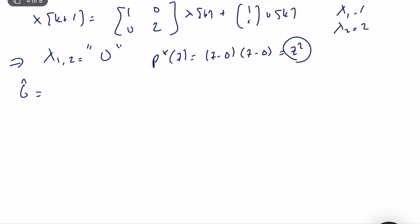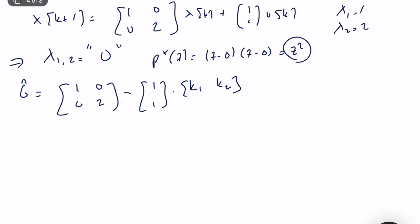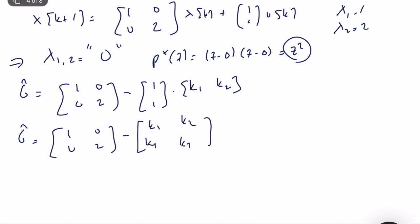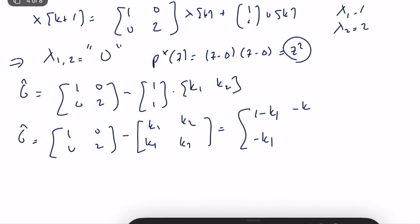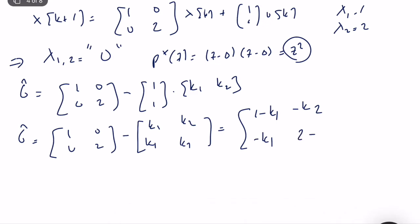So what is G-hat? G-hat = G − H·K = [1, 0; 0, 2] − [1; 1]·[k₁, k₂]. The matrix [1;1]·[k₁,k₂] expands to [k₁, k₂; k₁, k₂], so G-hat = [1−k₁, −k₂; −k₁, 2−k₂]. We then compute the characteristic equation as det(zI − G-hat) = det([z−1+k₁, k₂; k₁, z−2+k₂]), which gives z² + (k₁ + k₂ − 3)z + (2 − 2k₁ − k₂).